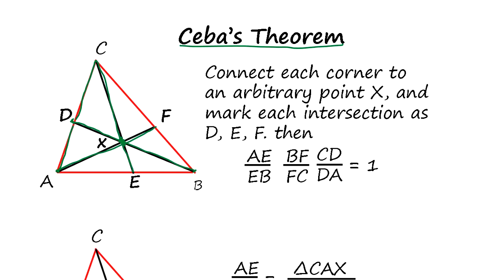We take an arbitrary point. Now, we look at the lengths AE and EB. We take the ratio, and we also take a ratio BF and FC, and we take a ratio CD and DA. We multiply them together, it becomes one.